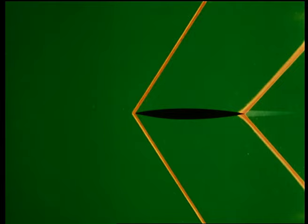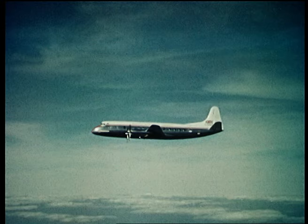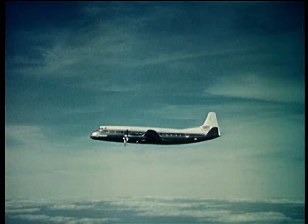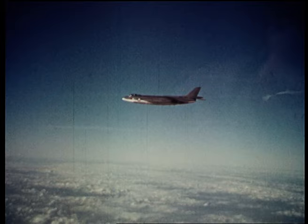So, when considering airflow, it's convenient to divide flying speeds into three ranges. The subsonic speed range, covering all speeds at which the flow everywhere around the aircraft is subsonic. The transonic range, covering all speeds at which the airflow is mixed, part subsonic, part supersonic.